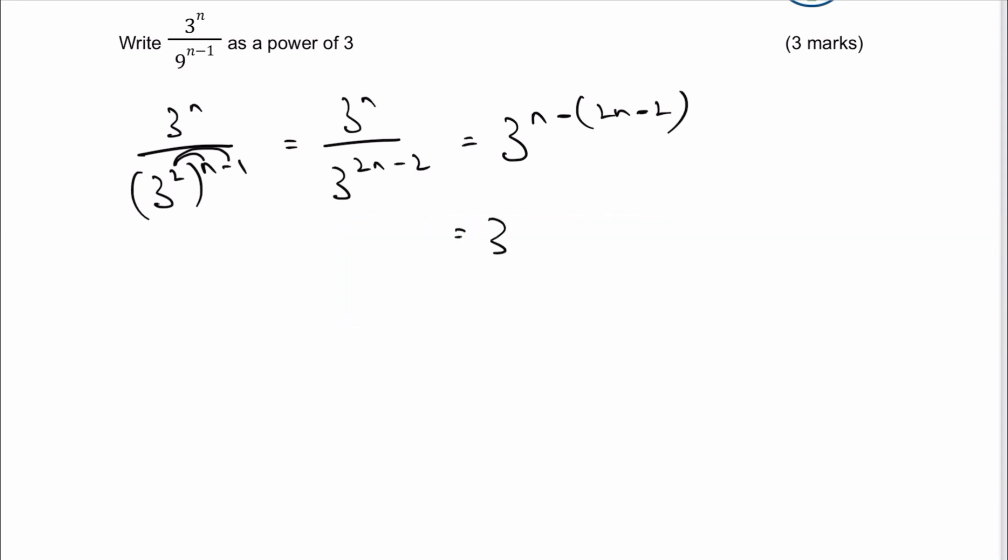So let's have a look at how that works. I'm going to have 3n, and then I've got minus 2n, and then I've got minus times a minus is going to be plus. So it's going to be plus 2.